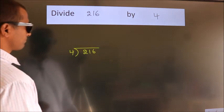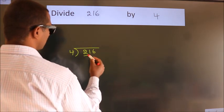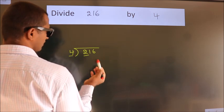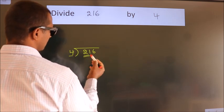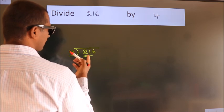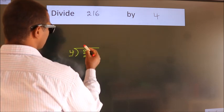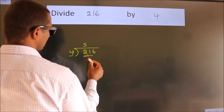Next. Here we have 2, here 4. 2 is smaller than 4, so we should take 2 numbers: 21. A number close to 21 in the 4 table is 4 fives, 20.